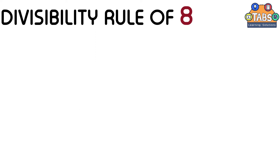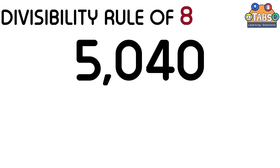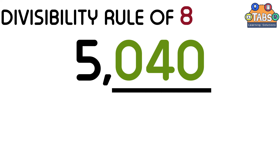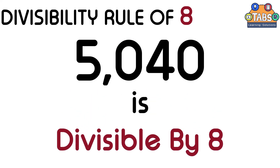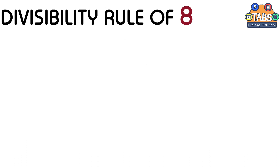Now let us try the following examples. 5,040. The last three digits of 5,040 is 040, and 040 is a multiple of 8, so 5,040 is divisible by 8.